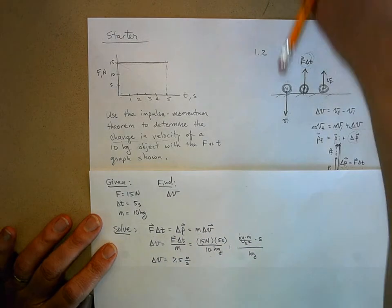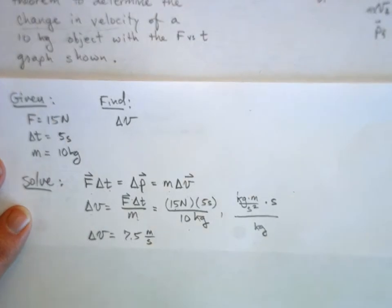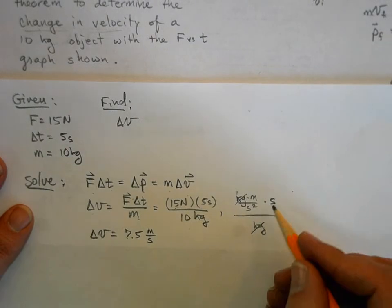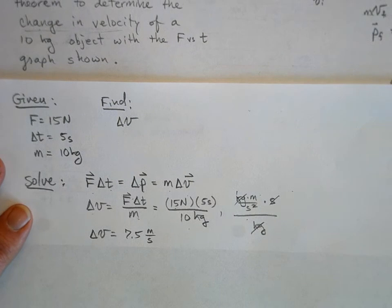Let me zoom in because I know you can't see it in the back. And when you do this, a kilogram cancels the kilogram. The seconds cancels the seconds. And I'm left with meters per second. Woo-hoo!